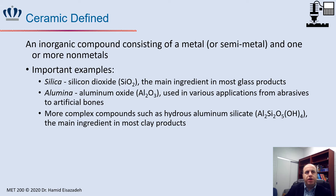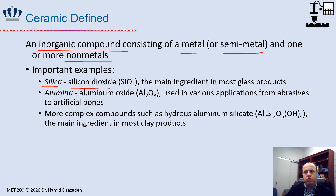Ceramic can be defined as an inorganic compound which consists of a metal or semi-metal combined with at least one non-metal. Some important examples are silica — another name for silicon oxide, SiO2 — which is the main ingredient in most glass products.